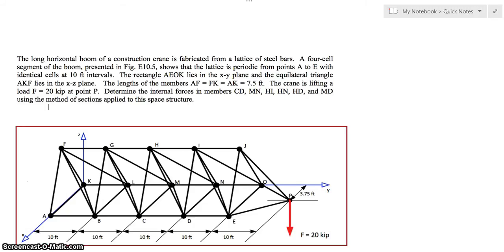What we're looking at here is the horizontal boom of a construction crane. A little bit about its geometry real quick. We can see that it is 10 feet across here, 3.75 feet here, meaning it is 7.5 feet here. We have our only applied force here, 20 kips all the way on one side. Of course, these are rectangles across here. These are equilateral triangles here.